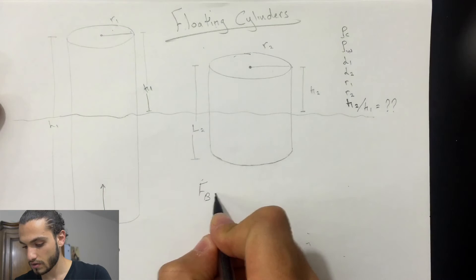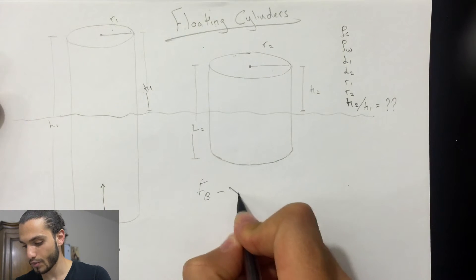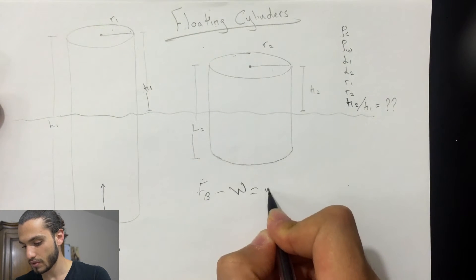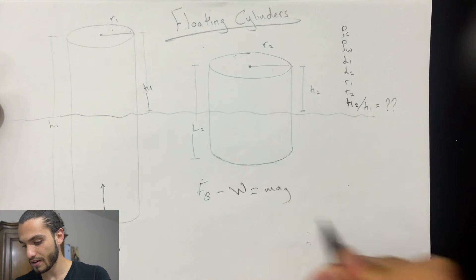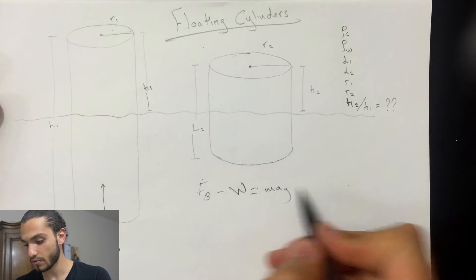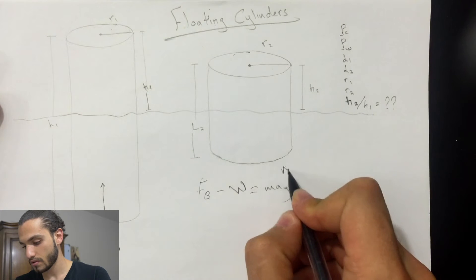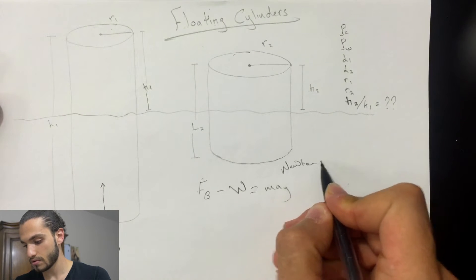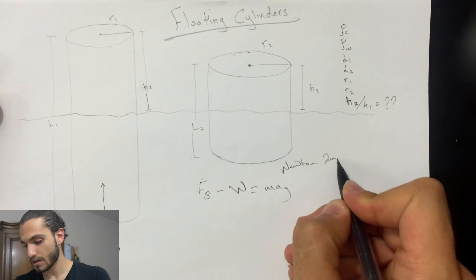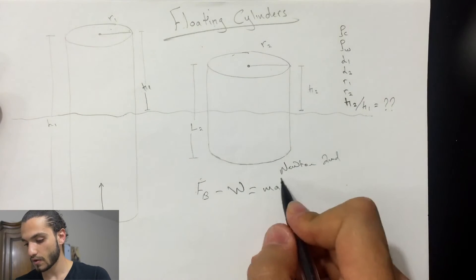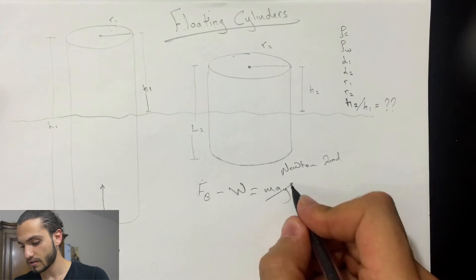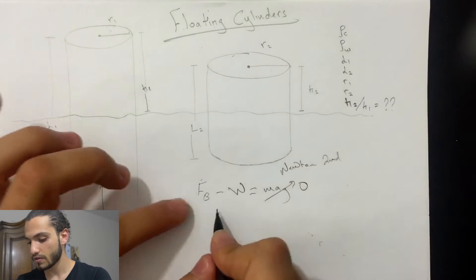Because it's not moving, so force buoyant minus the weight will be equal to m times ay. This is Newton's second law. Since there's no motion in it, you just take this to zero.